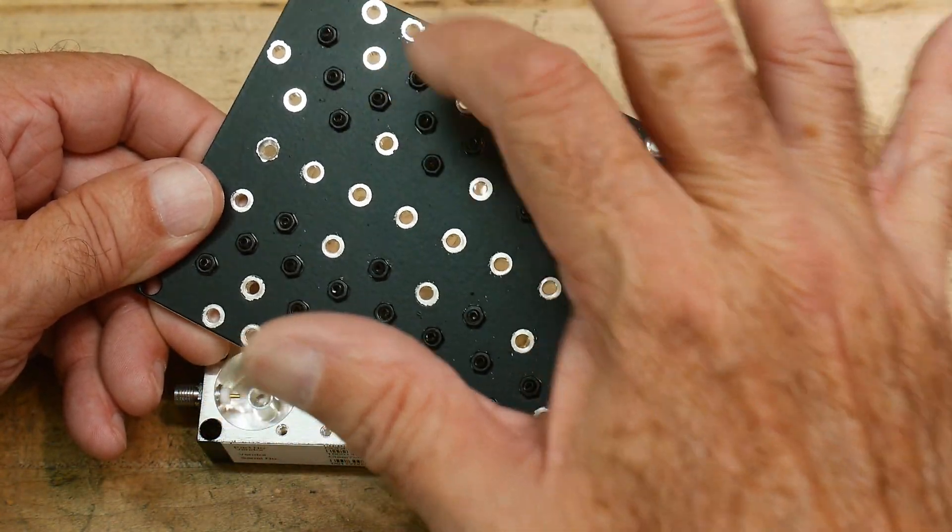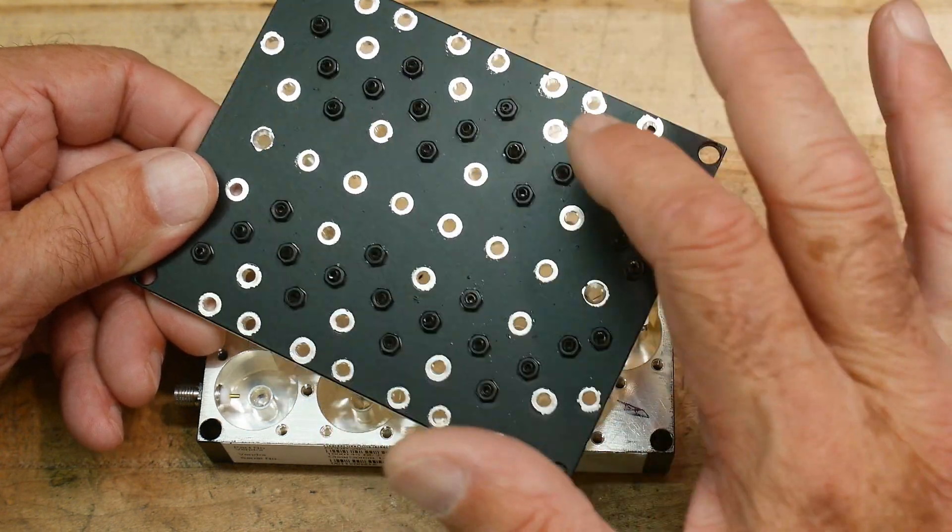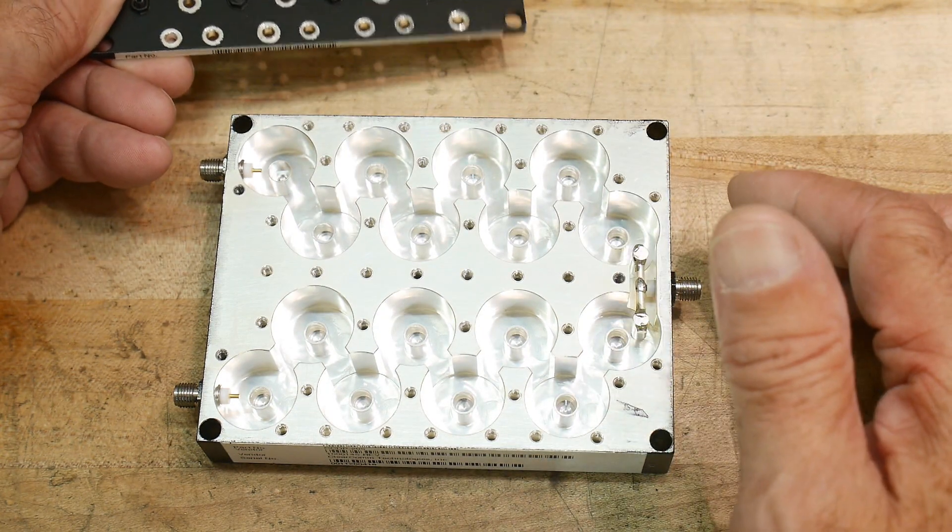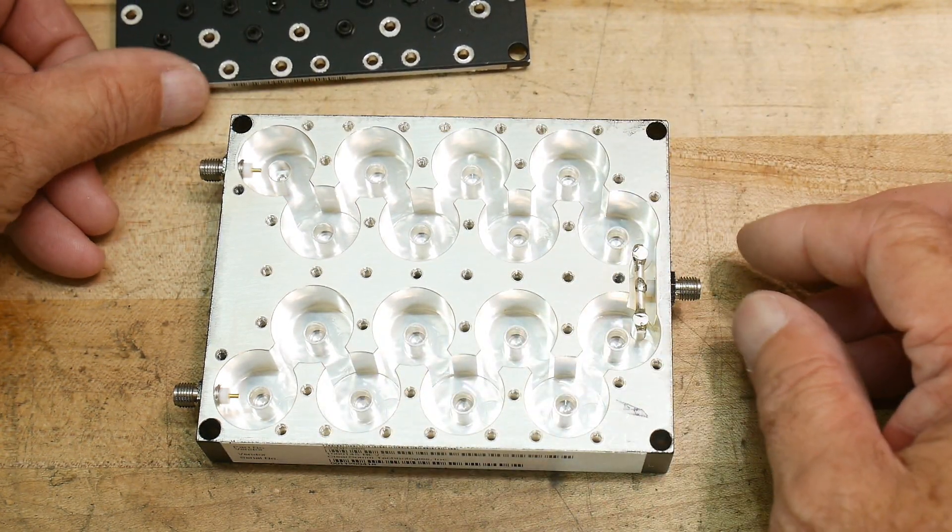One, two, three, four, five, six, seven, eight, nine, 10, 11, 12, 13, 14, 15, 16 per side. So 16 adjustments on this side and 16 adjustments on this side.